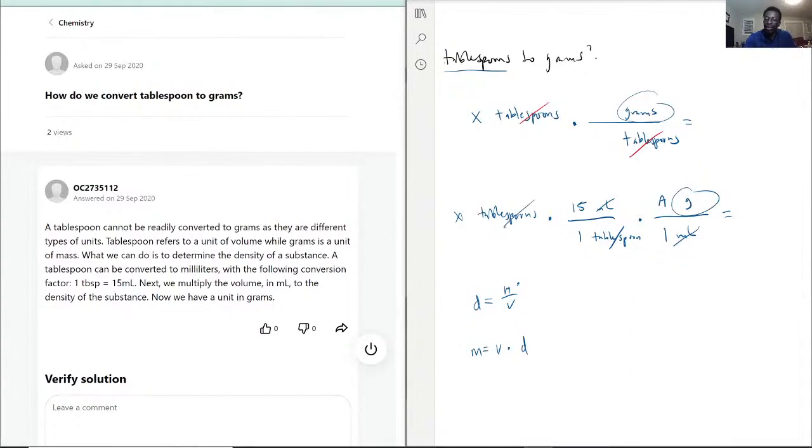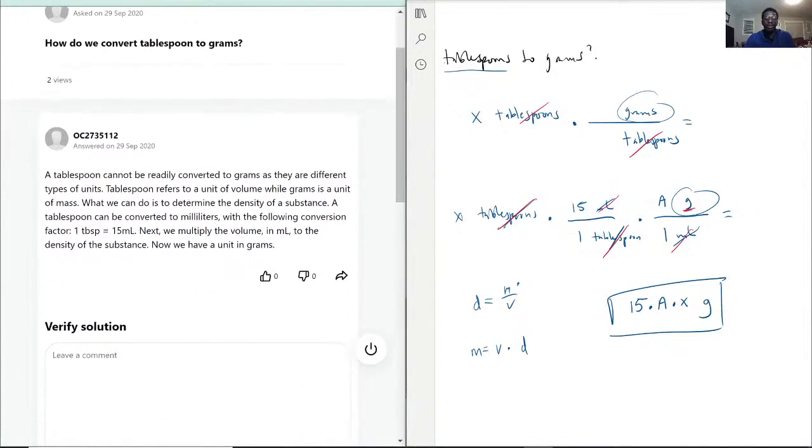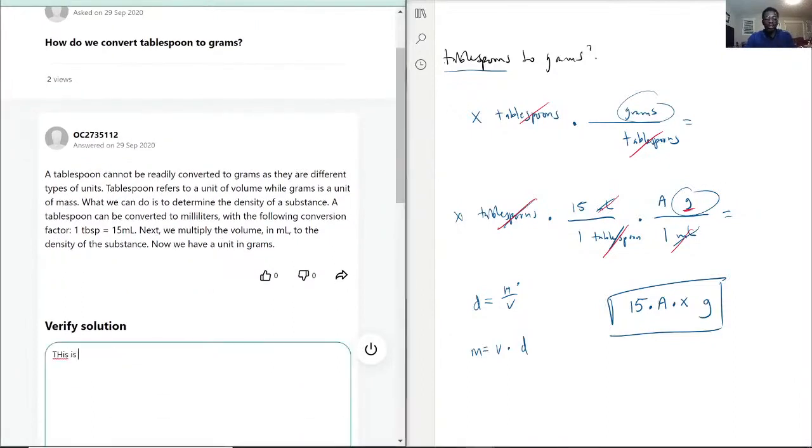So, in total, we'd have, in this theoretical answer, 15 times A times X grams would be how to get to your grams from tablespoons. As you've seen here, we've canceled out every appropriate unit and ended up with just grams. So, that being said, this is correct.